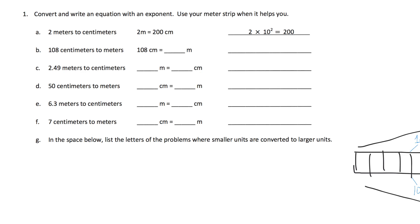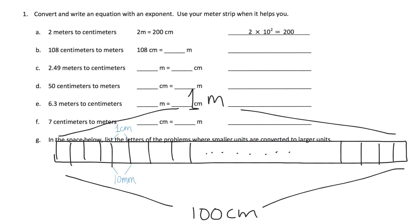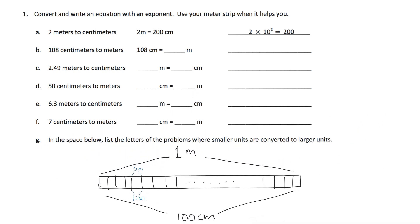The idea is to convert and write an equation with an exponent. Use your meter strip when it helps you. I have a meter strip right here. Problem A says 2 meters is equal to how many centimeters? Well, if you have one meter, that's 100 centimeters. So if you have another meter, that's another 100 centimeters — so that's why it's 200. You have 2 meters times 100, and that gives you 200.